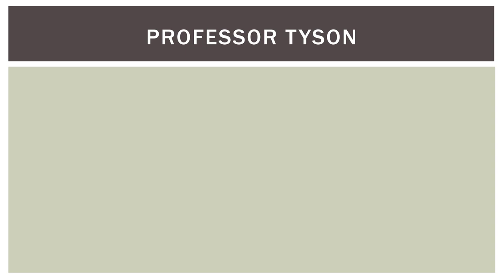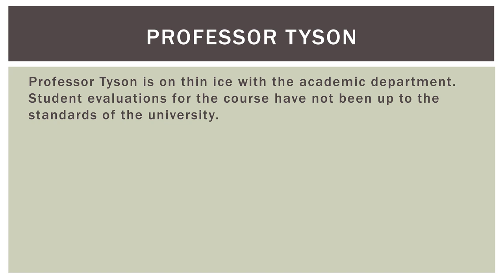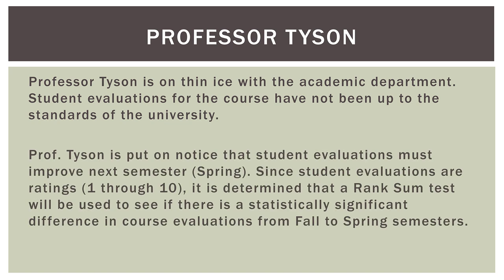Here's the problem we'll be calculating in Excel. Professor Tyson is on thin ice with the academic department — student evaluations for the course have not been up to the standards of the university. Professor Tyson is put on notice that student evaluations must improve next semester, going from fall to spring. Since student evaluations are ratings like a Likert scale, one through ten, a rank sum test will be used to see if there is a statistically significant difference in course evaluations from fall to spring semesters. This is a common case where a non-parametric test may actually be a better approach.